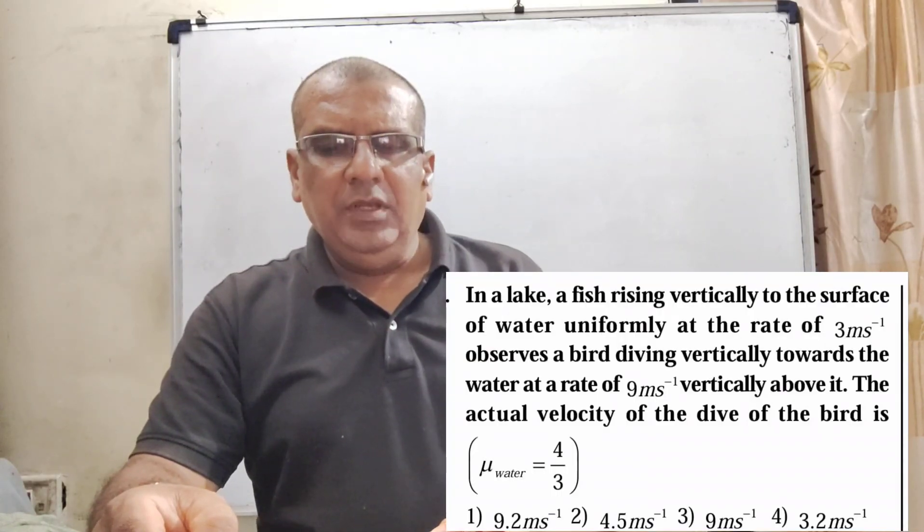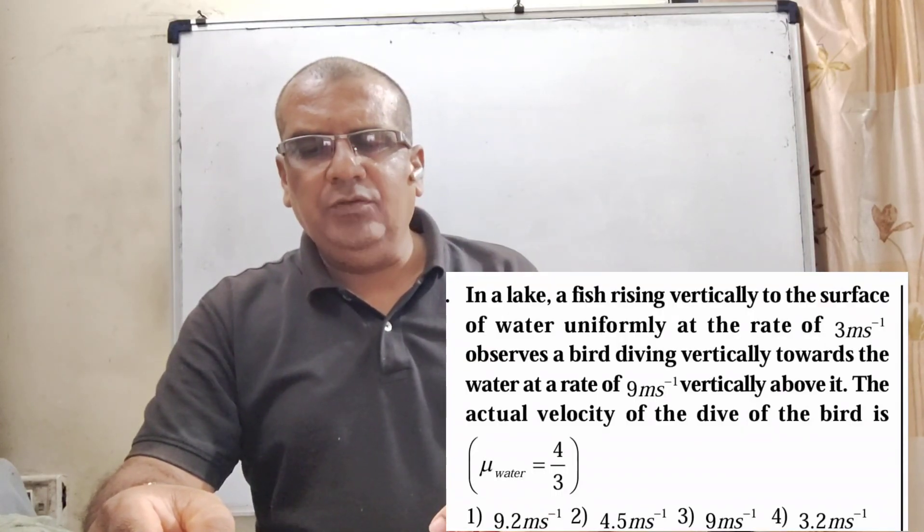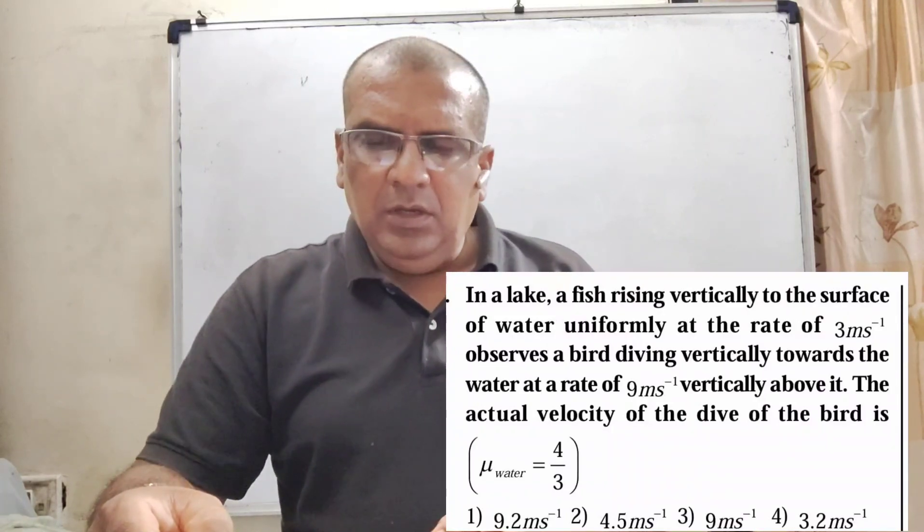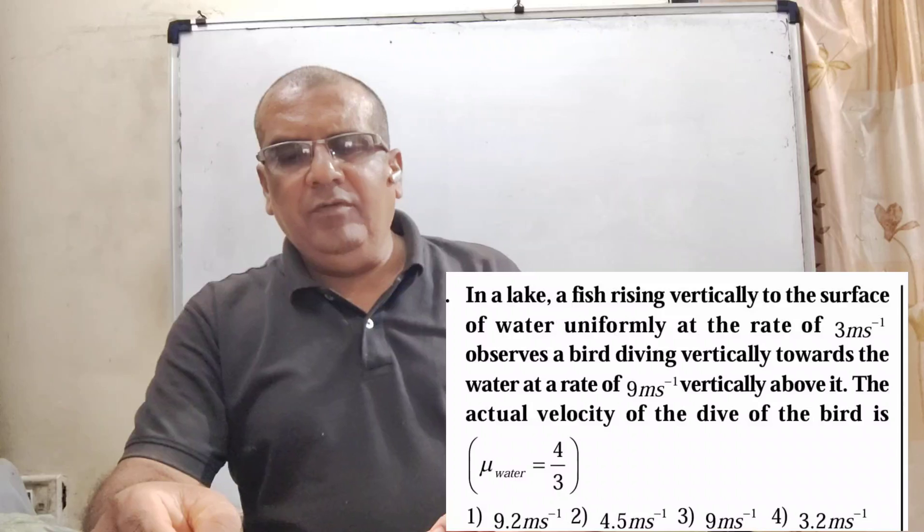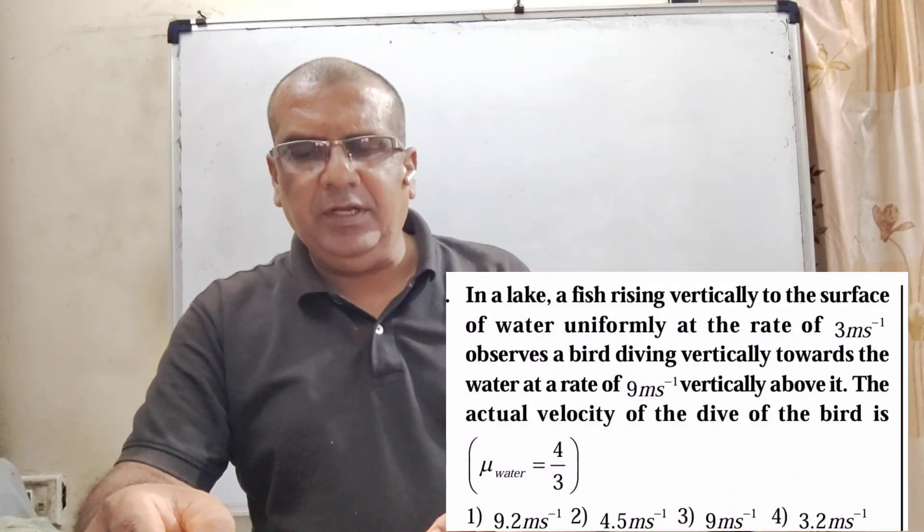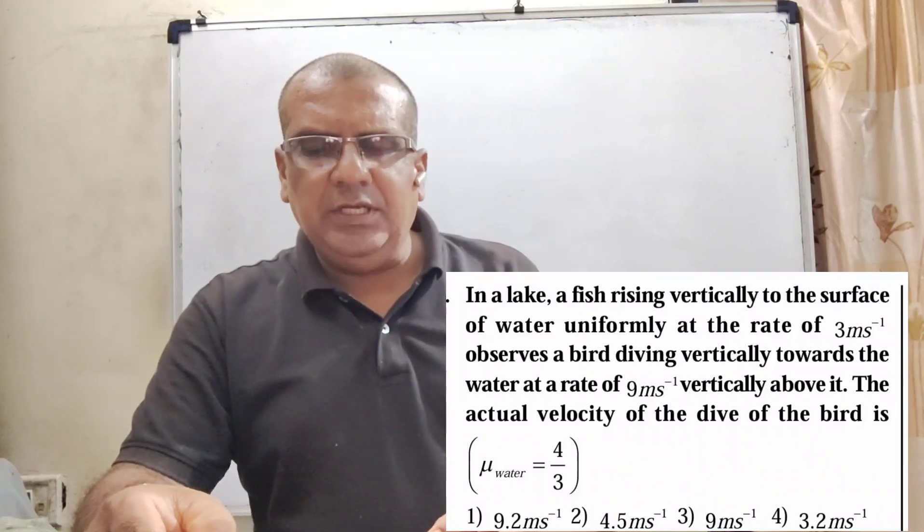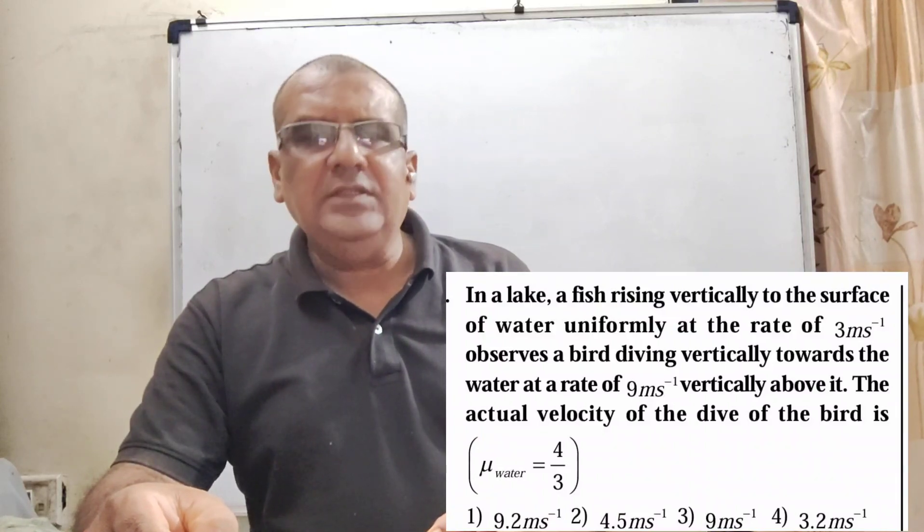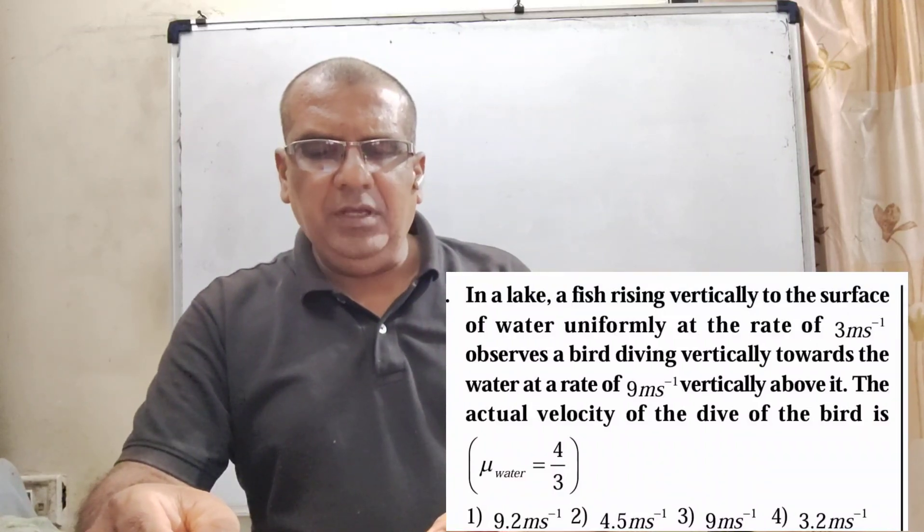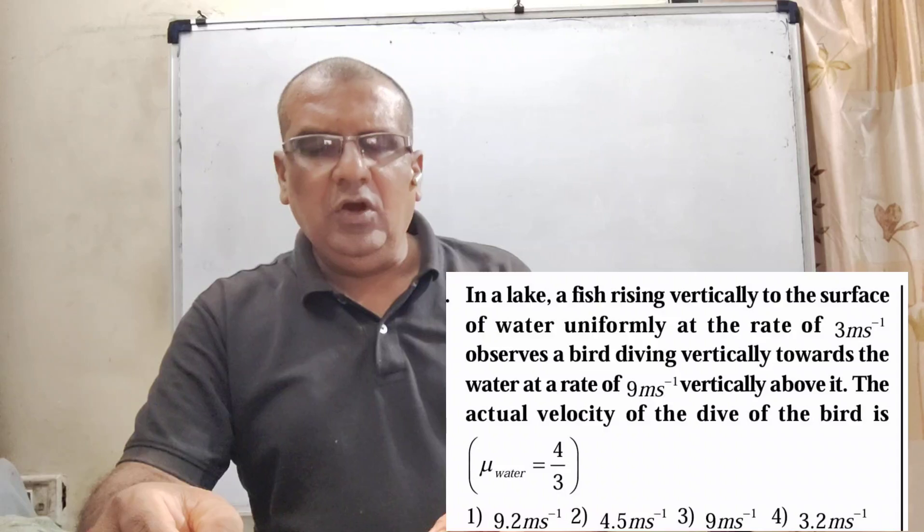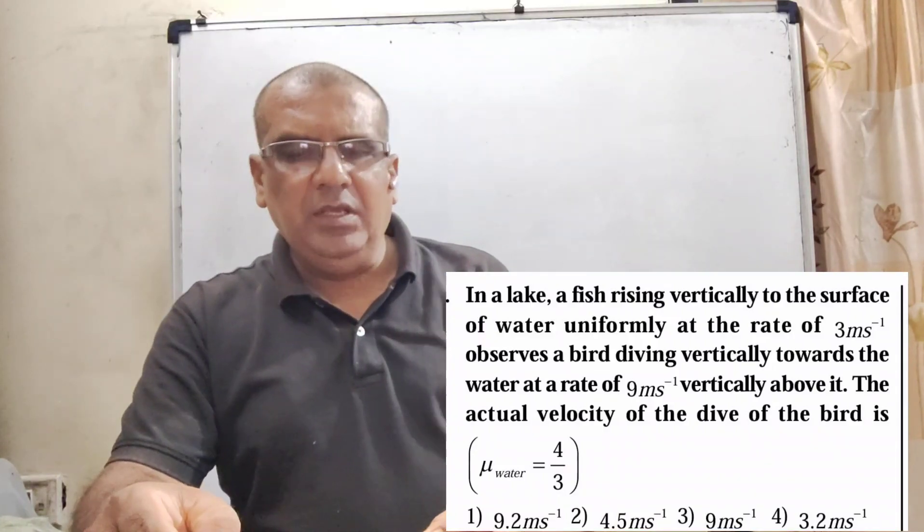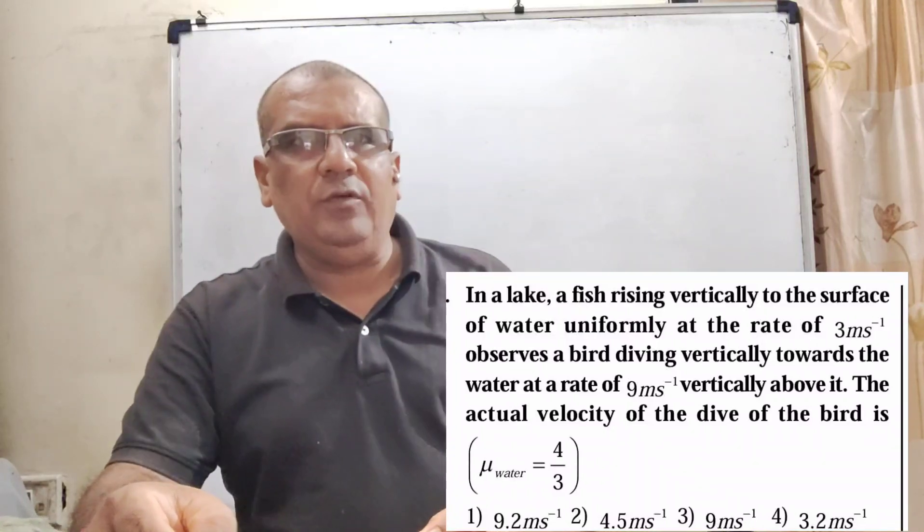Now here is the question. In a lake, a fish rising vertically to the surface of water uniformly at the rate of 3 meter per second, observes a bird diving vertically towards the water at a rate of 9 meter per second vertically above it. The actual velocity of the dive of the bird is - here we have given 4 options. Option A: 9.2 meter per second. Option B: 4.5 meter per second. Option C: 9 meter per second. Option D: 3.2 meter per second. Here, we have given refractive index of water is 4 by 3.